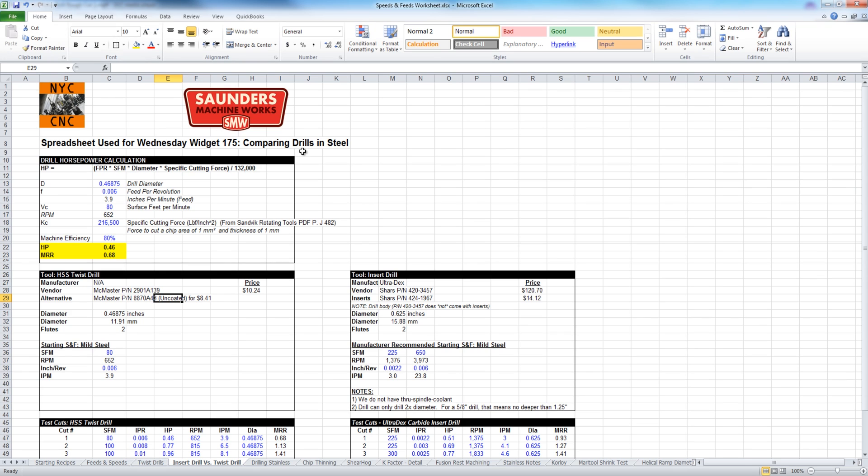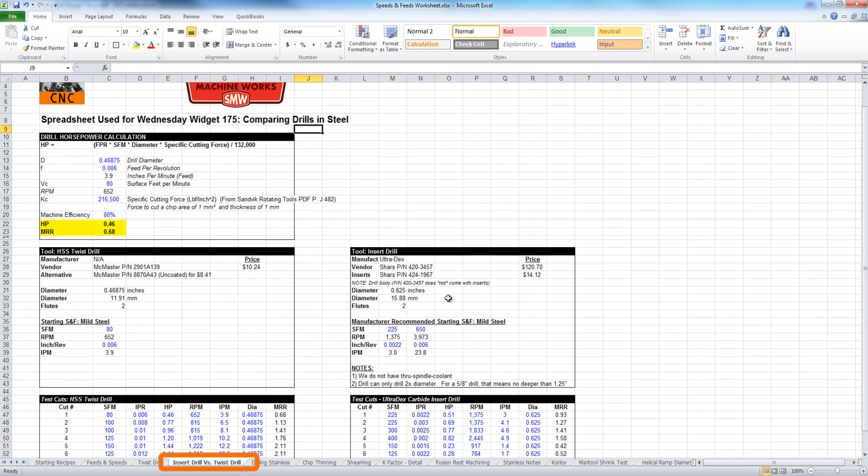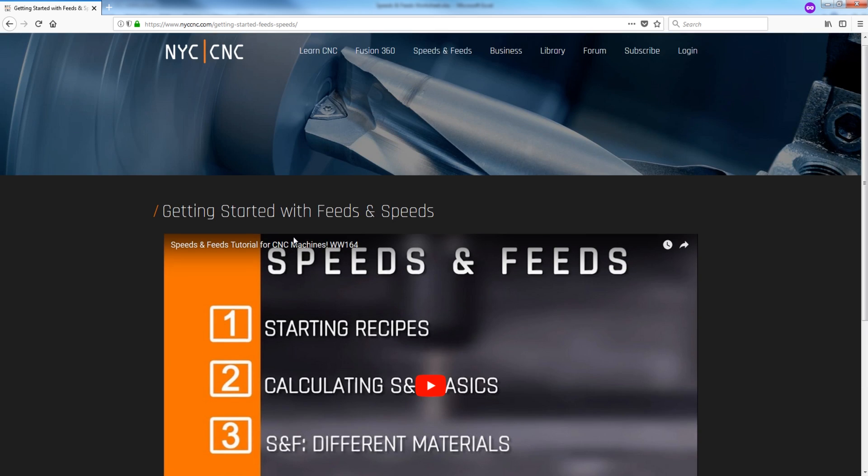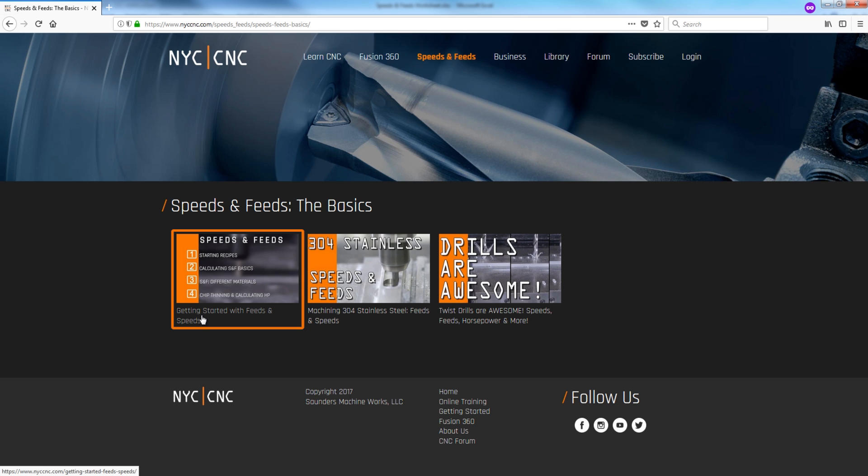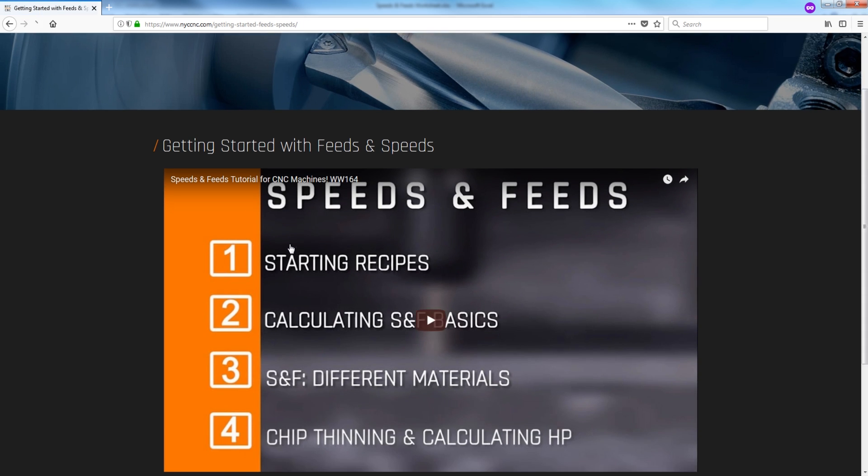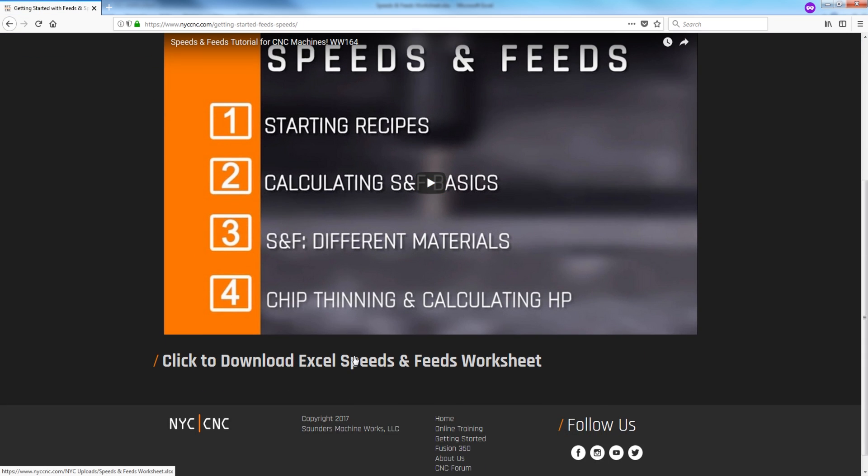We've got this Excel file and we've got a tab down here dedicated for today's Wednesday widget: insert drill versus twist drill. This is available to download free for anybody over on the NYC CNC website. Go to speeds and feeds, the basics. And the first card, getting started with speeds and feeds, has a really good video and the latest version of our Excel sheet is always here.